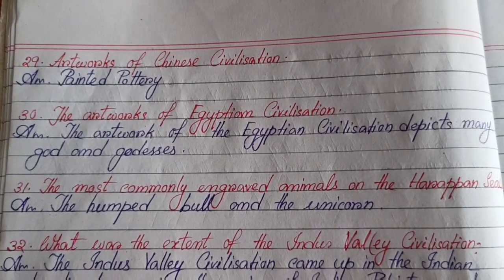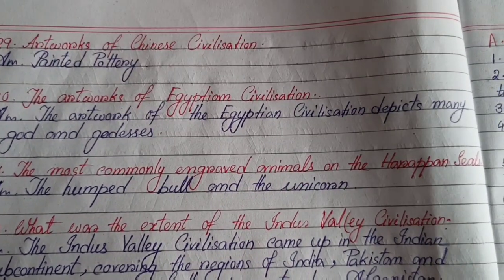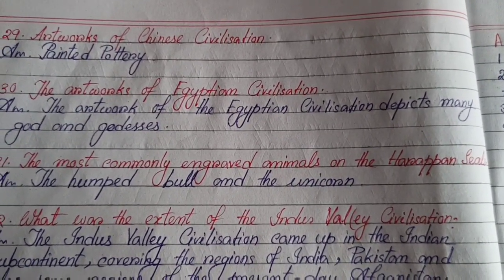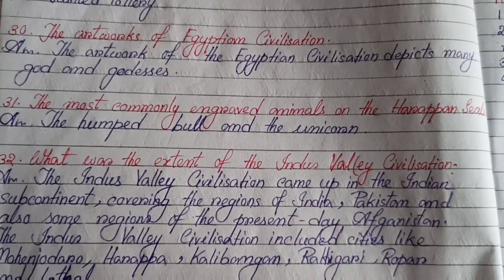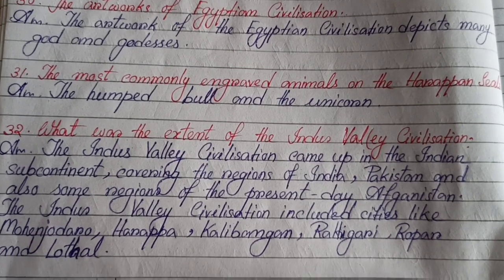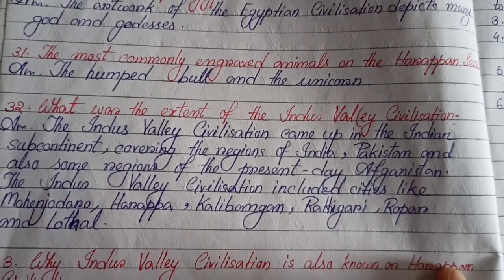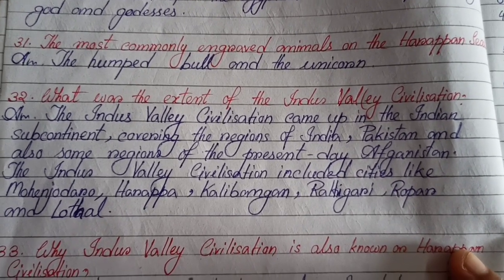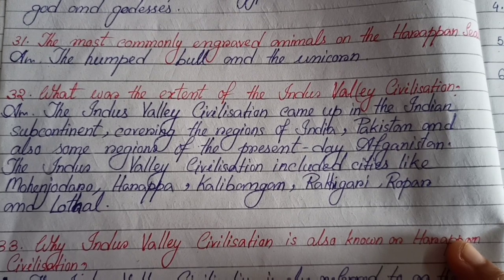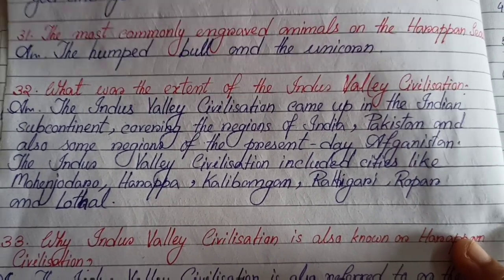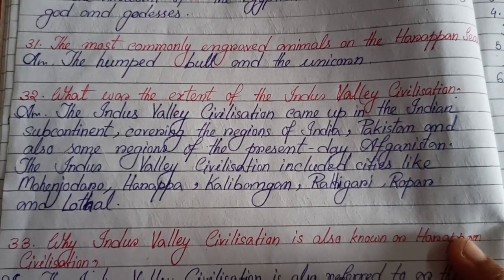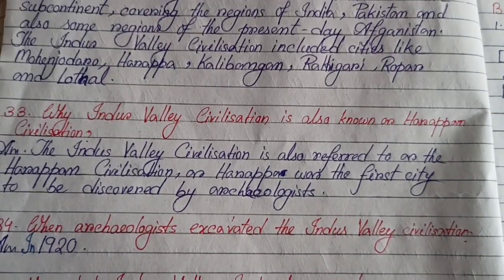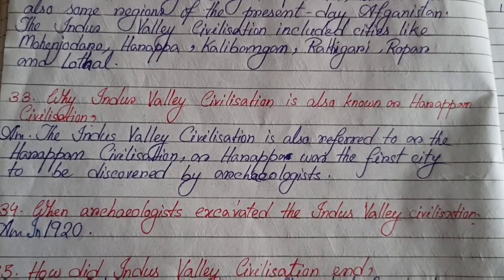The artwork of the Chinese civilization — painted pottery. The artwork of the Egyptian civilization depicts many gods and goddesses. The most commonly engraved animals on the Harappan seals were the humped bull and the unicorn. The extent of the Indus Valley Civilization: it came up in the Indian subcontinent covering India, Pakistan, and some regions of present-day Afghanistan, including cities like Mohenjo-daro, Harappa, Kalibangan, Rakhigarhi, Ropar, and Lothal.